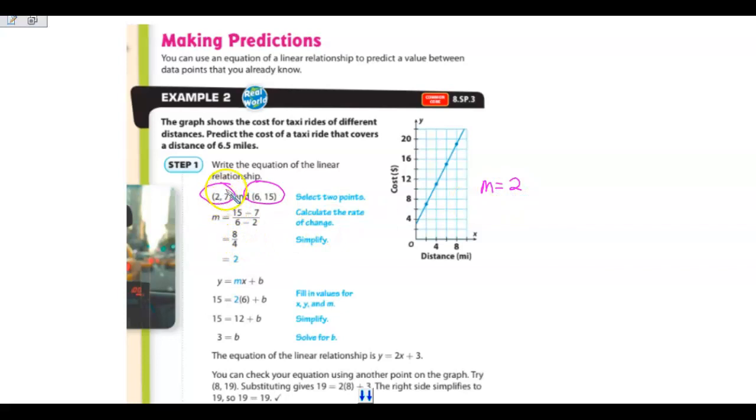And then picking one, it looks like they use the 6 and the 15. 15 is my y. 6 is my x. If I take 12 from 15, I get 3. So my y-intercept is 3. So my equation is 2x plus 3.